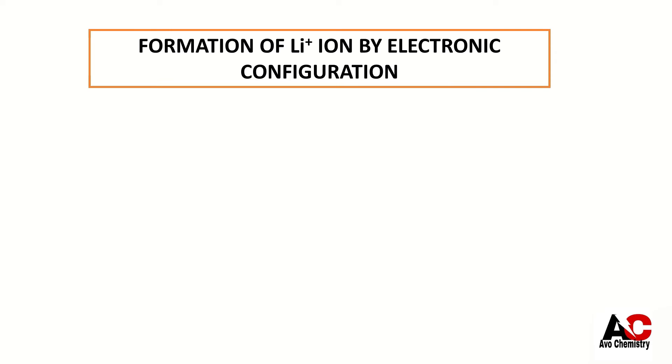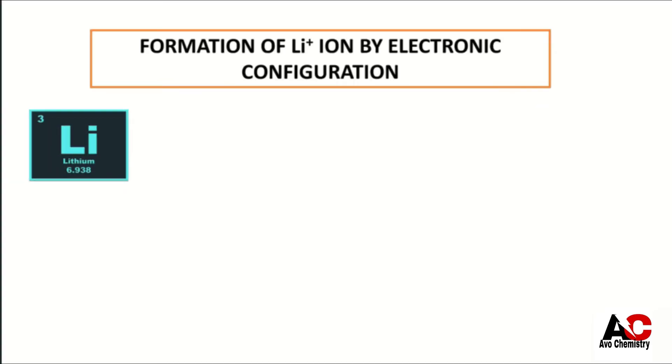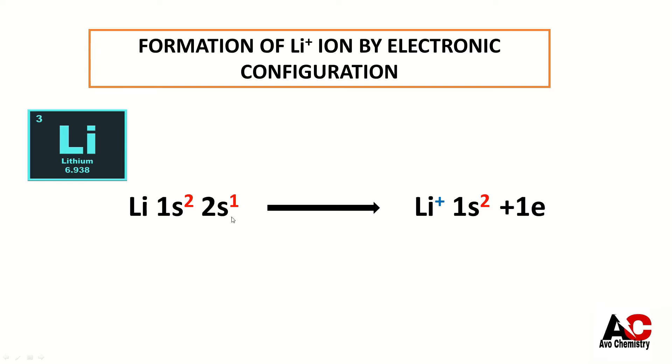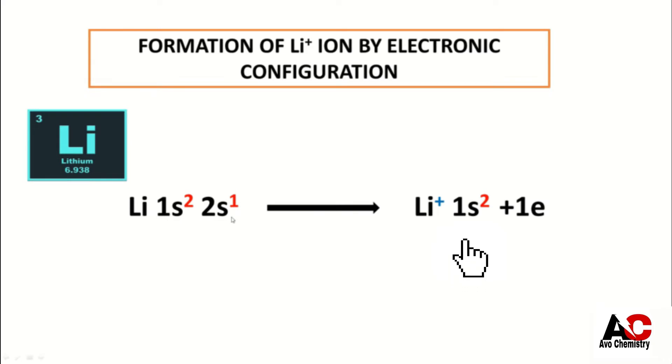Formation of lithium ion by electronic configuration. Atomic number of lithium is 3 and its configuration is 1s2 2s1. But lithium atom loses an electron in order to get stability to form lithium ion. So its configuration becomes 1s2 with plus 1 charge.